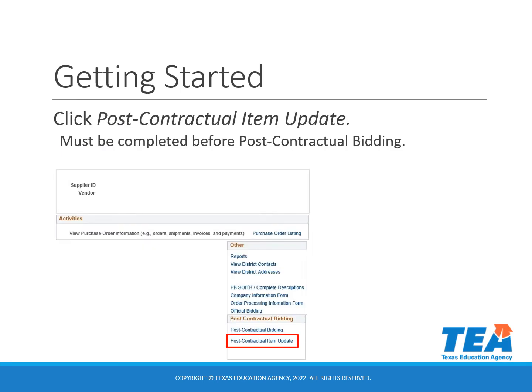An example is changing the title from ABC Reading 8 Year Online to ABC Reading Online Access Through School Year 2026-27. To get started, you will click the post-contractual item update link on your EMAT start page. You will want to complete any item updates prior to submitting new post-contractual bids.